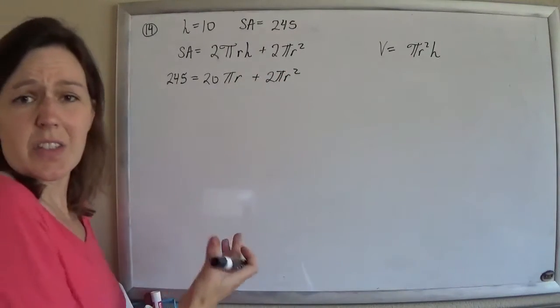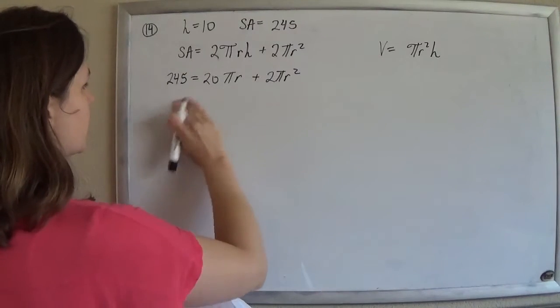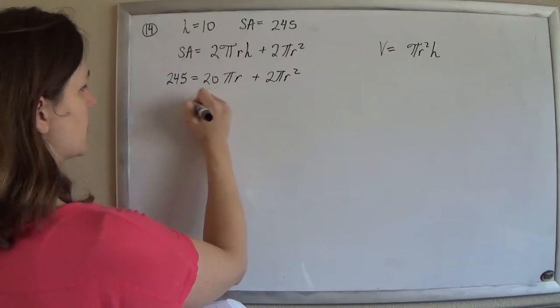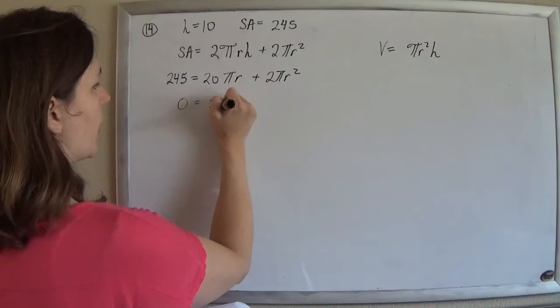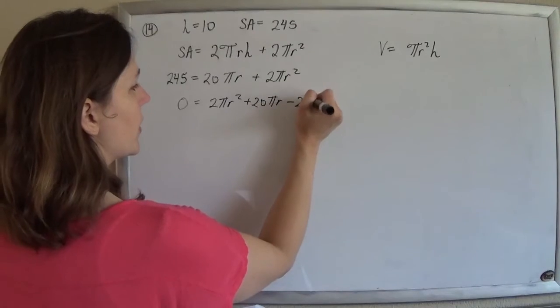And this is enough to solve for r. And so if I put that equal to 0, I can just say that 0 will equal 2 pi r squared plus 20 pi r minus 245.